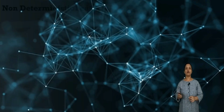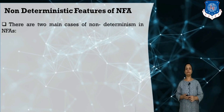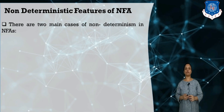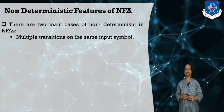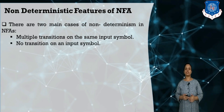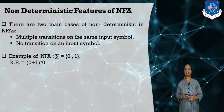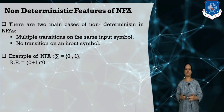Now let's start with the method. First of all we need to understand what is NFA. In a previous video we already learned what NFA is. NFA stands for non-deterministic finite automata. In NFA there are two main cases: there may be multiple transitions for a given input, and there may be no transition for a given input symbol.